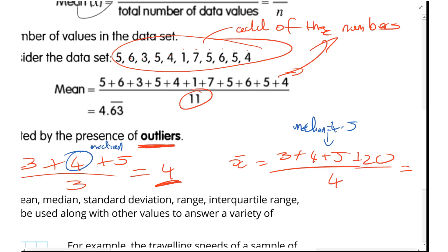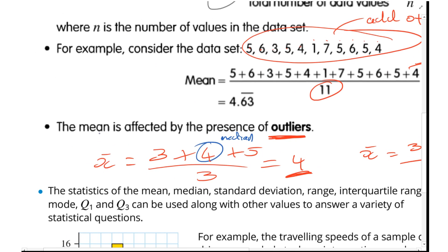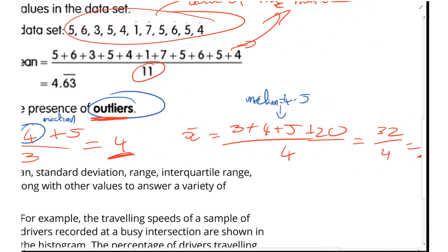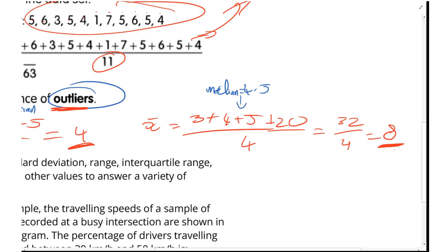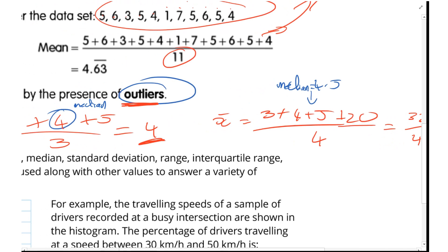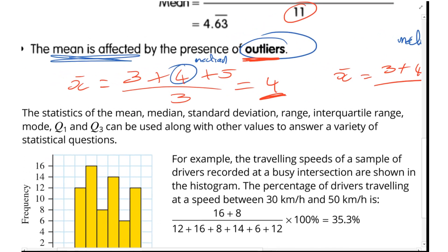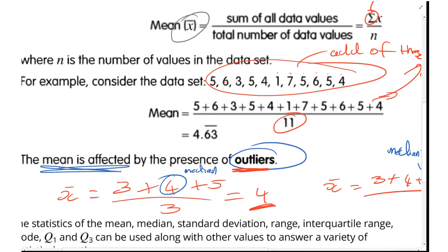But you can see that the median doesn't change much. This is why we say the mean is affected by the presence of outliers - that value has made a big difference. I've gone from 4 to 8, compared to 4 to 4.5.